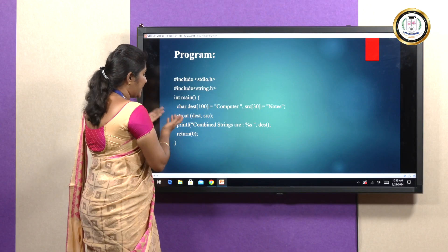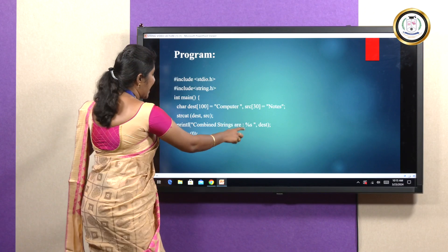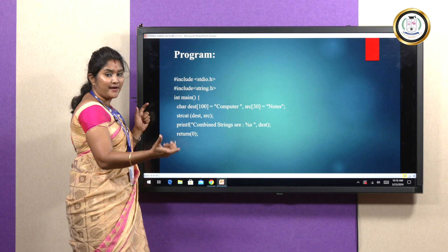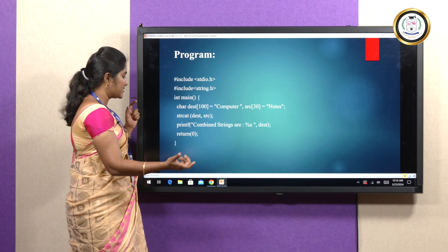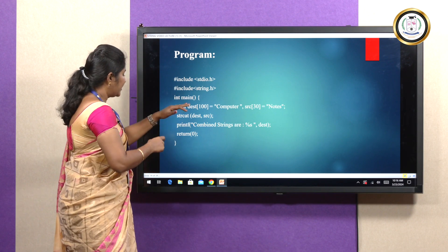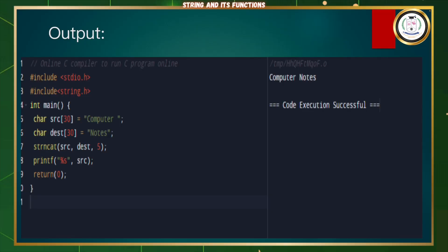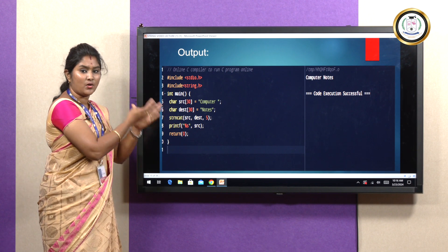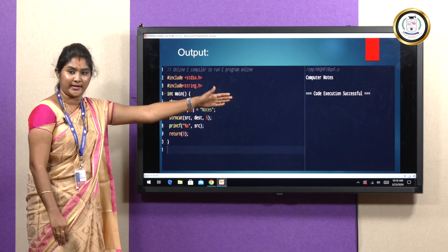In the printf statement, we are printing the combined string using the %s format specifier, since the output is a string. The output of this program is 'computer nodes' — we had two strings, 'computer' and 'nodes', which have been concatenated.